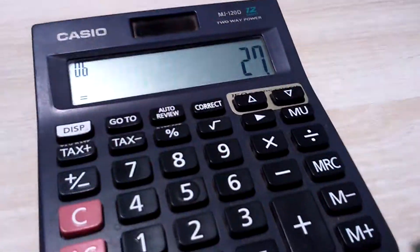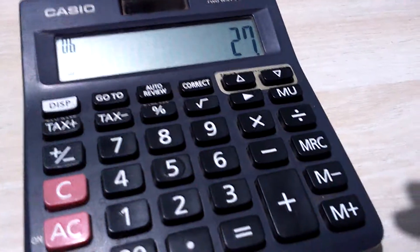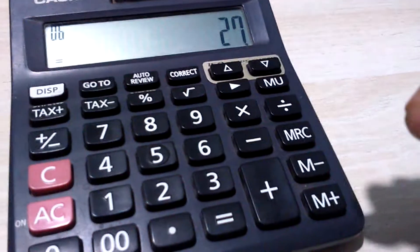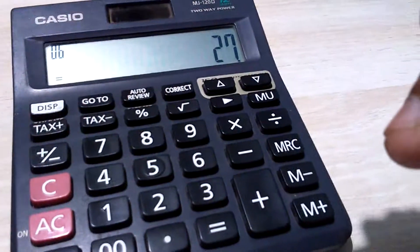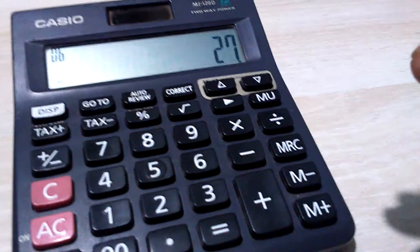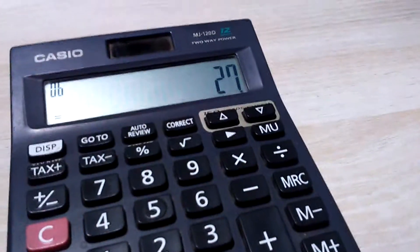We can find fourth root, fifth root, sixth root by following the same process. Only we have to divide this answer by the number which we want to get as our answer.